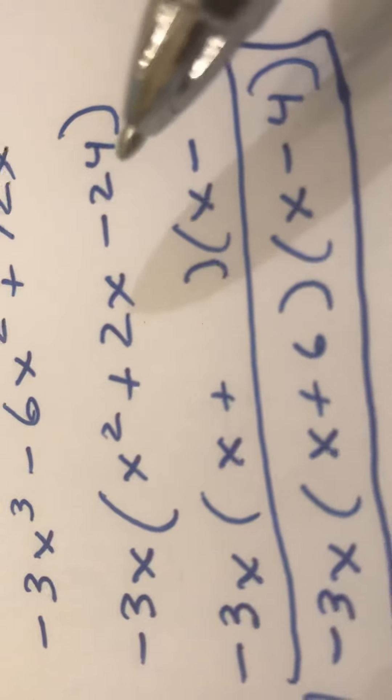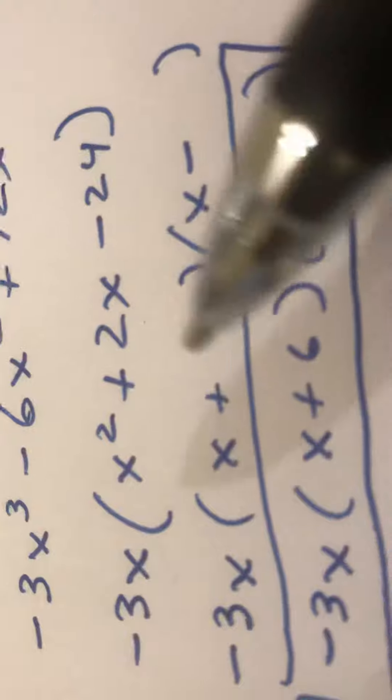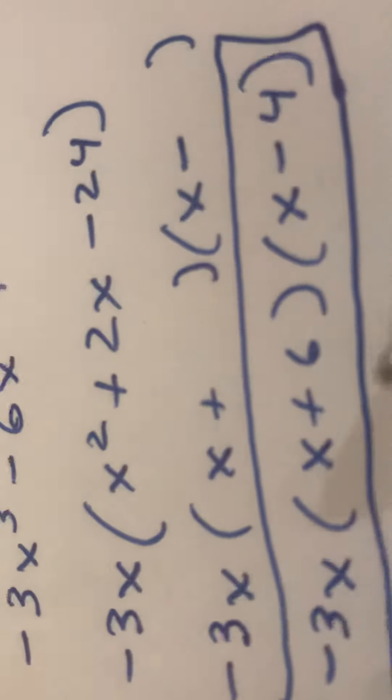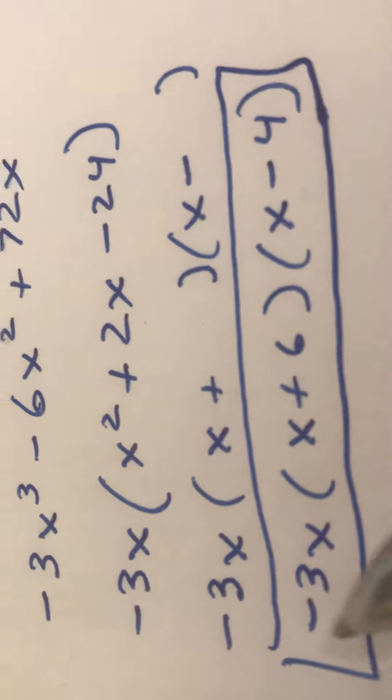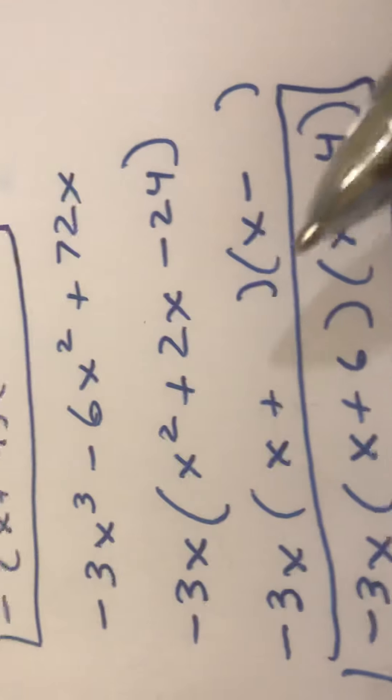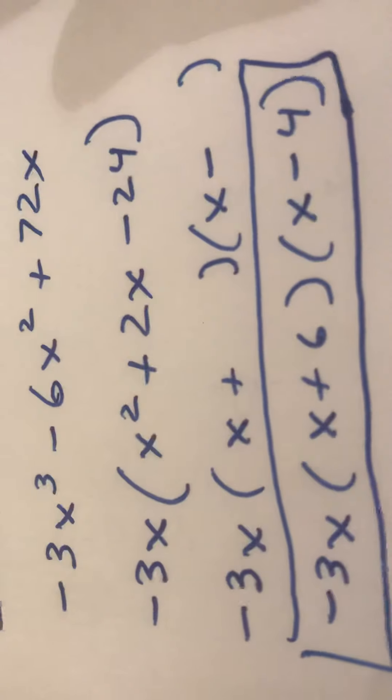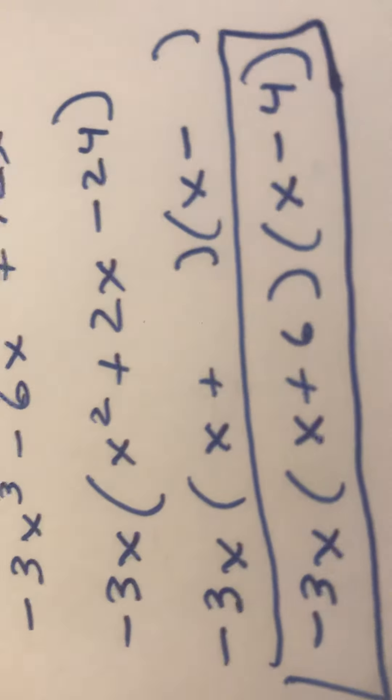So what two numbers multiplied together equal negative 24 but add up to 2? It's 6 and negative 4. You need this negative 3x out here so if you multiplied this all out you'd get back to the beginning. These are negative 4x. Kind of fun, good luck.